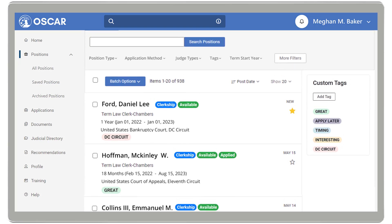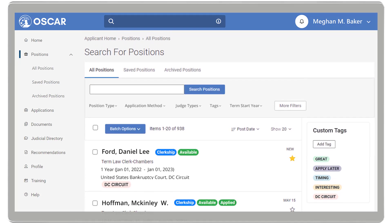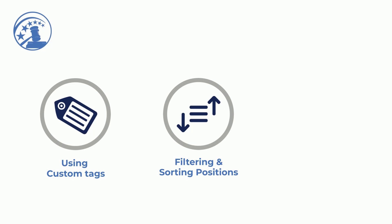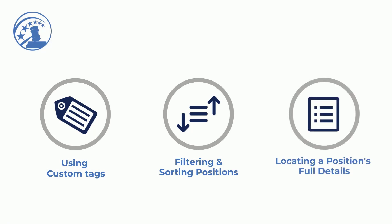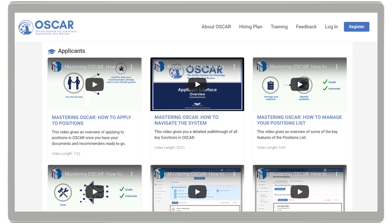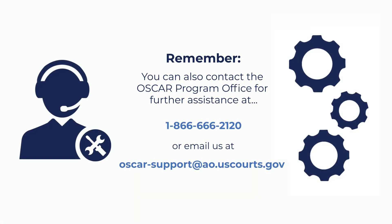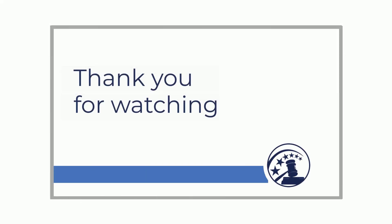This concludes our video on how to manage your positions list in OSCAR. We hope you have learned more about using custom tags, filtering and sorting positions, and locating a position's full details. To learn more about position details, watch our video on applying to positions in OSCAR. If you need further assistance, please contact the OSCAR Program Office at 866-666-2120 or send an email to oscar-support@ao.uscourts.gov. Thank you for watching.